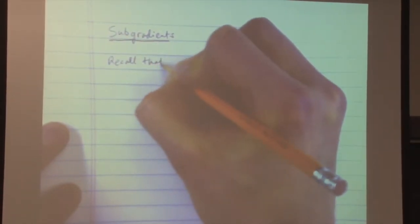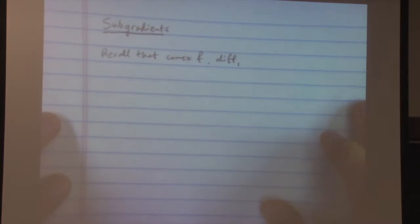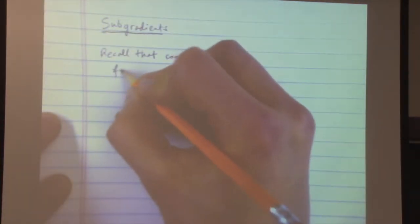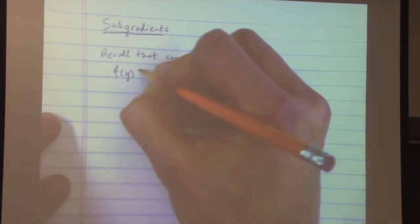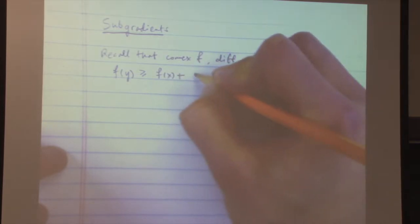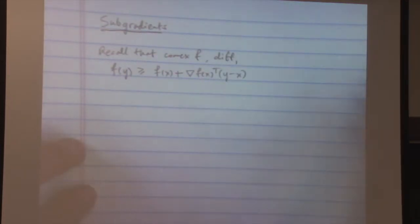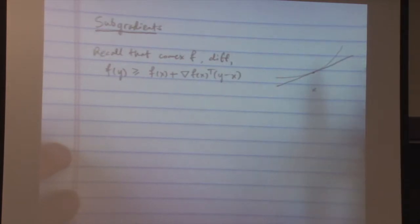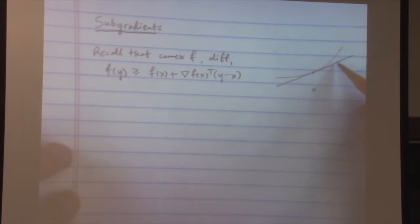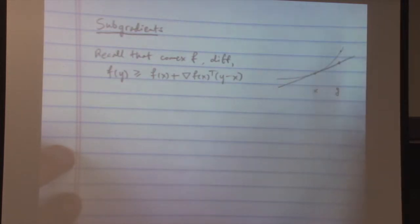For convex differentiable functions, if we have a convex function f that's differentiable, it has the following property: if I look at the value of f at some point y and form a first-order Taylor expansion around another point x, then the Taylor expansion is always going to underestimate the value of the function. The tangent line is always a global underestimator of the function itself.